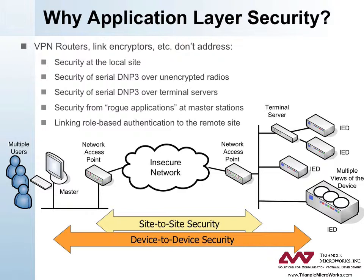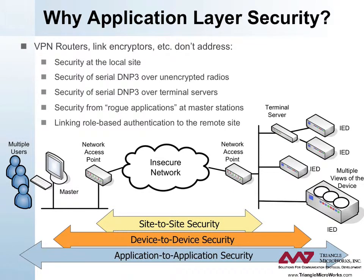Device-to-device security includes the use of protocols such as Transport Layer Security (TLS) to secure the complete TCP connection between two devices, similar to when you access your bank through the internet. However, TLS only works on IP networks and is therefore lost if DNP3 messages are forwarded over radios or serial links. It also does not address the possibility that rogue software applications may be installed on a device, making use of the fact that the device itself is considered secure. Application-to-application security ensures that individual users, not just devices, are authenticated by the remote devices, and that the authentication information will be carried wherever the DNP3 message travels. It permits remote outstations to perform rule-based authentication and authorization, so that the level of security changes depending on who is attempting to perform an operation.